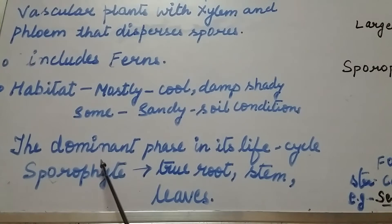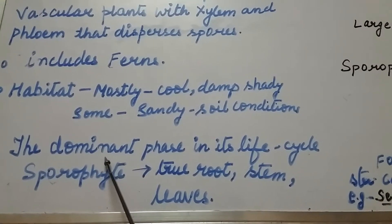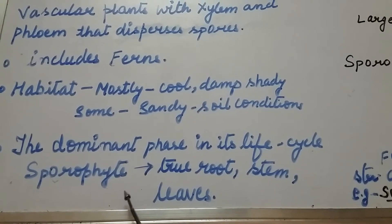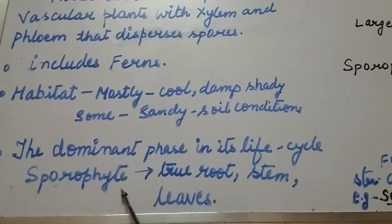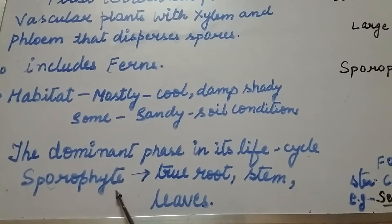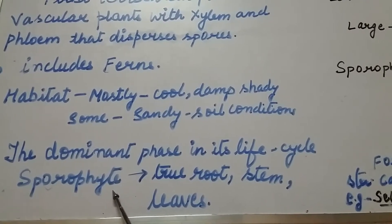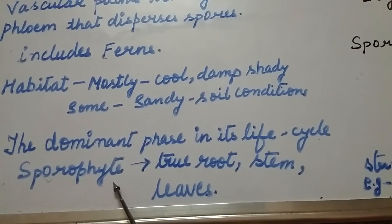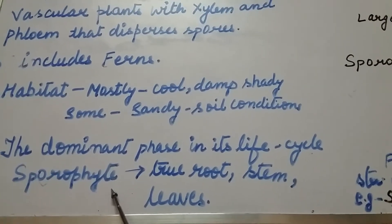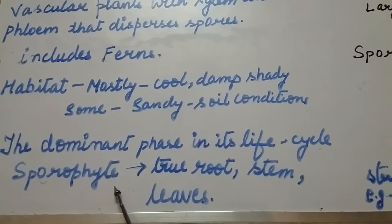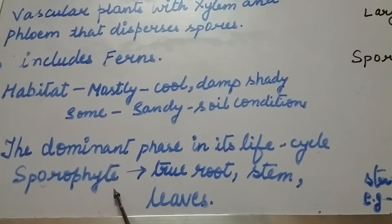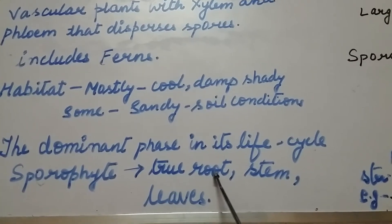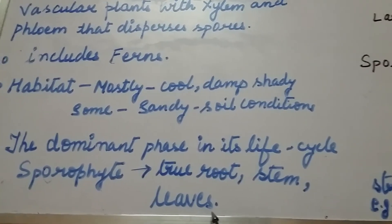As we have seen in the case of Bryophytes, the main or dominant phase in their life cycle was the gametophyte. But in the case of Pteridophytes, the main or dominant phase of their life cycle is the sporophyte, because of well-differentiated vascular tissues. They are divided into true roots, stem, and leaves.